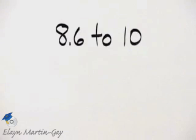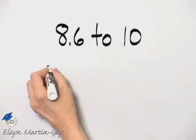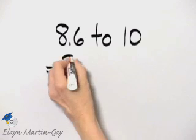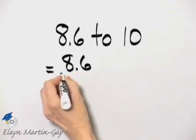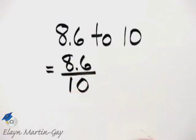Our directions are to write this ratio as a fraction in simplest form. We have 8.6 to 10, so in fraction form this is 8.6 over 10.